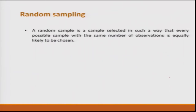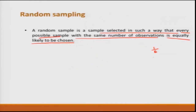The first one is simple random sampling. A random sample is a sample selected in such a way that every possible sample with the same number of observations is equally likely to be chosen — that is, the probability of selecting each item is equal. For example, if I throw a dice, the probability of getting 1 is 1/6, getting 2 is 1/6, getting 3 is 1/6, and so on. All numbers have the same probability. This is known as simple random sampling.